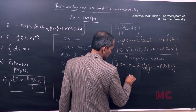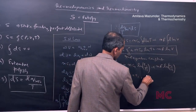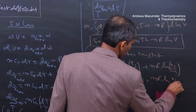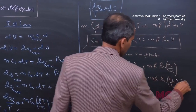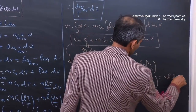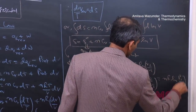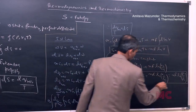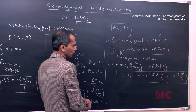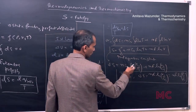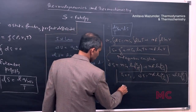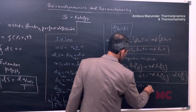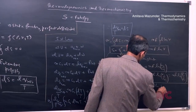If T₁ equals T₂ (isothermal), then ΔS equals nR ln(V₂/V₁), which also equals nR ln(P₁/P₂) — a very important conclusion. If V₁ equals V₂ (isochoric), then ΔS equals nCᵥ ln(T₂/T₁).